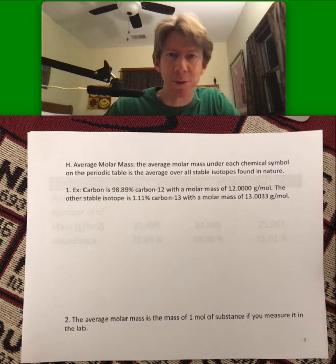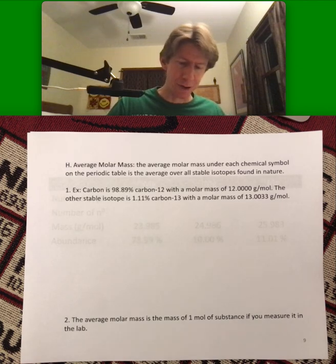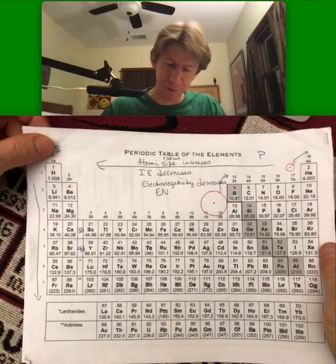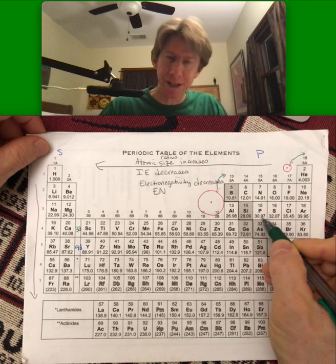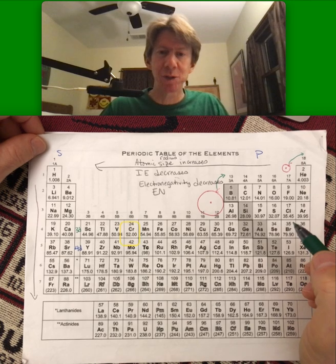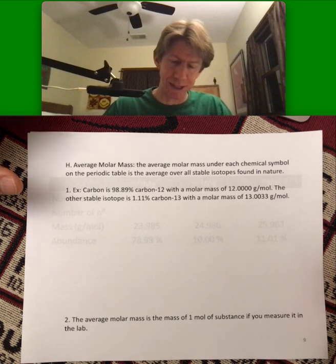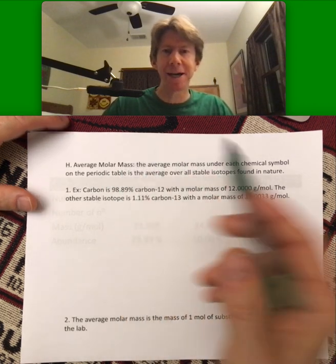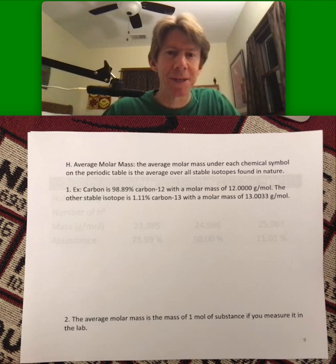We just talked about isotopes, and we're going to use isotopes to get back to these average molar masses that we've talked about before. Remember, it is these numbers underneath each of the chemical symbols on the periodic table that are the average molar mass for each of these elements.